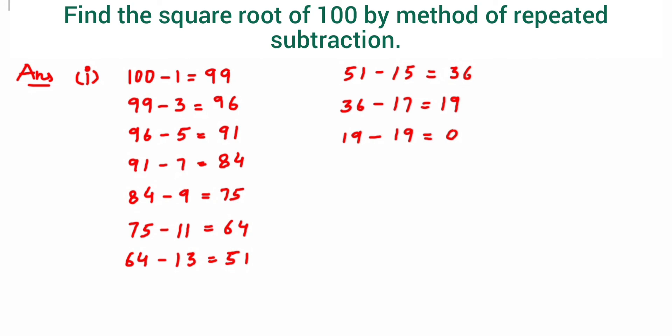Now after doing this, we have to count how many odd numbers we have used or how many steps it took to get 0, and that will be the answer for the square root of 100. So when you count, we have used total 10 odd numbers here, so the square root of 100 will be equal to 10.